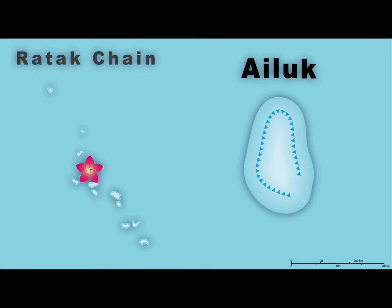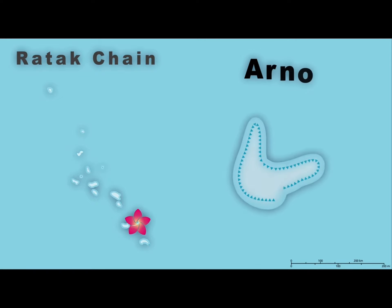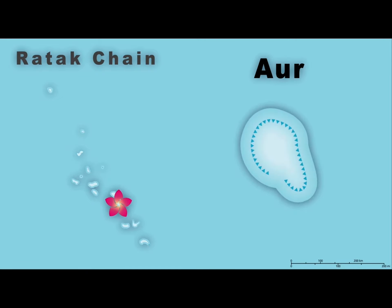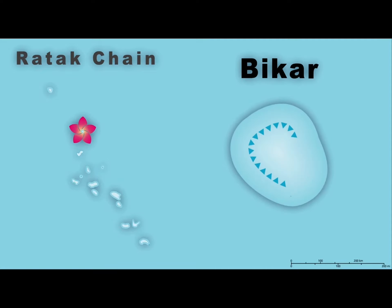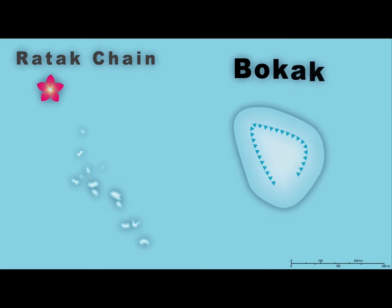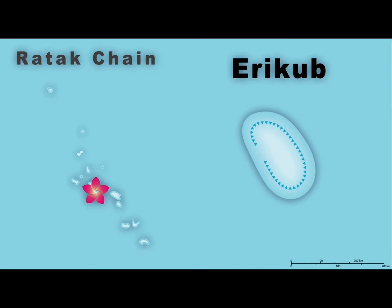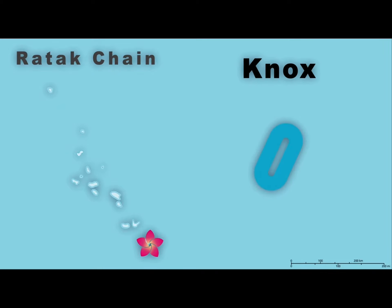The Radek Chain is what you're seeing now, with a mix of atolls and islands — I'll teach you somehow. Alouk, Aylin, Arno, R, Bikar, Bokak, Ericube, Nox atolls.